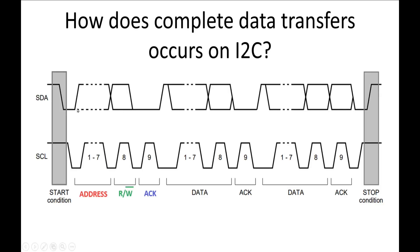As we know, there are two lines — SDA and SCL. Whenever a master wants to communicate with any of the slaves, it has to give the start condition, which we have discussed in detail. Since in an I2C bus a master can be connected to many slaves, in the beginning it has to send the address of the slave to which it wants to communicate.